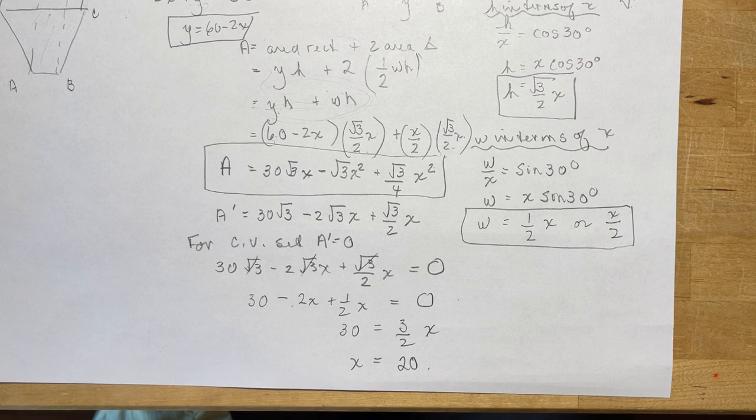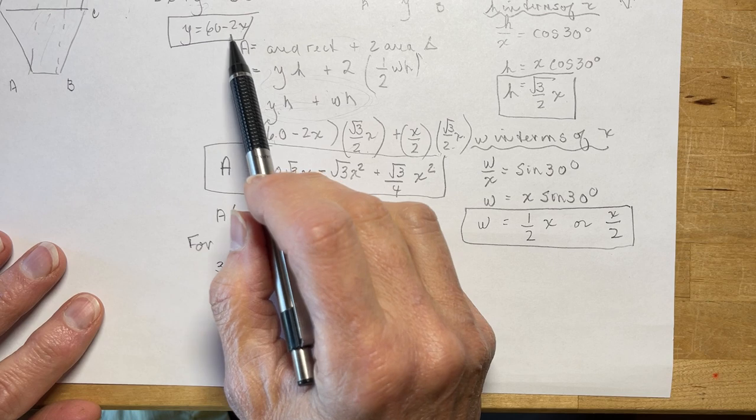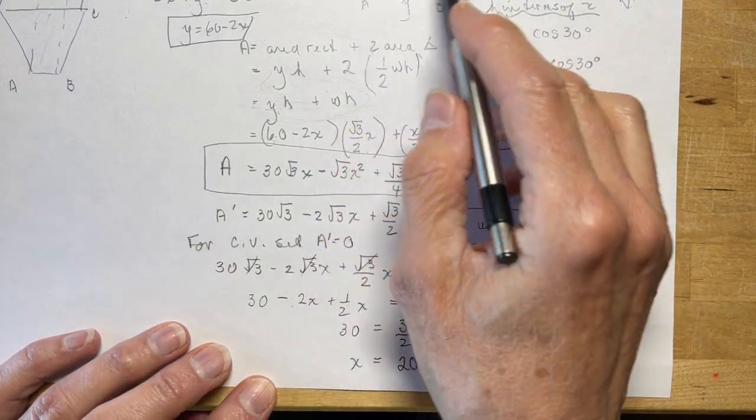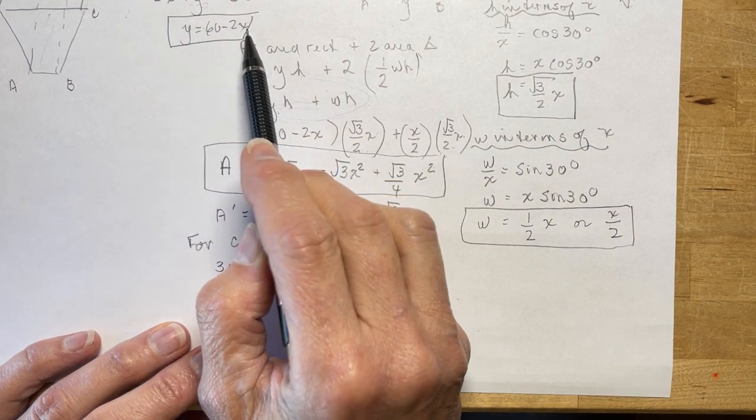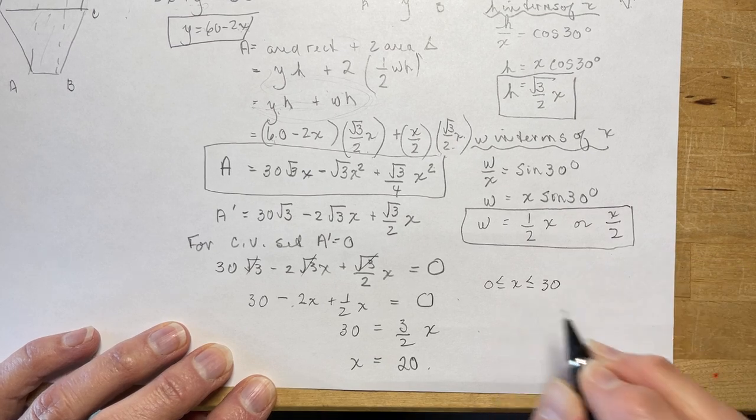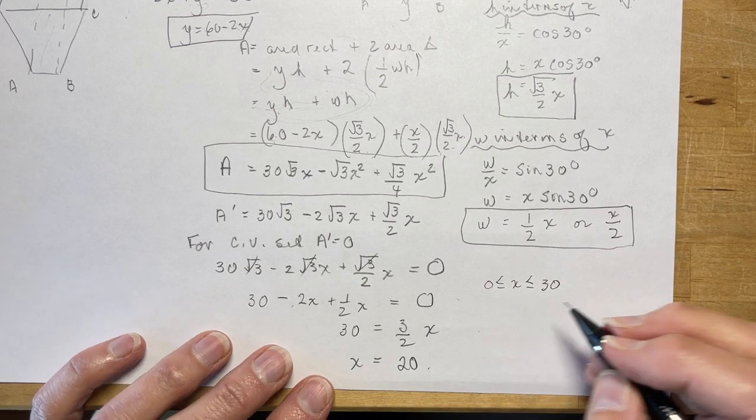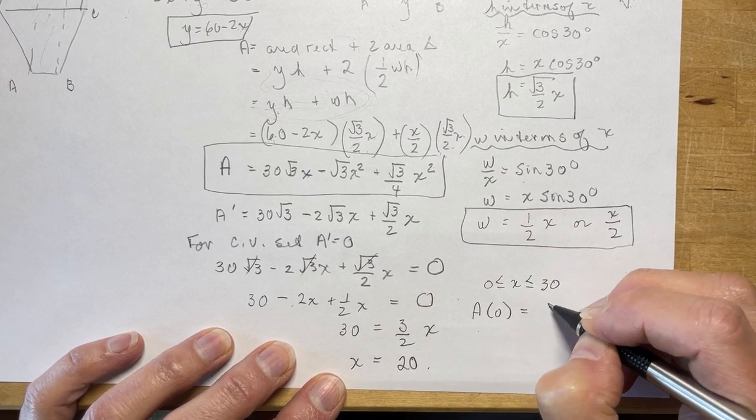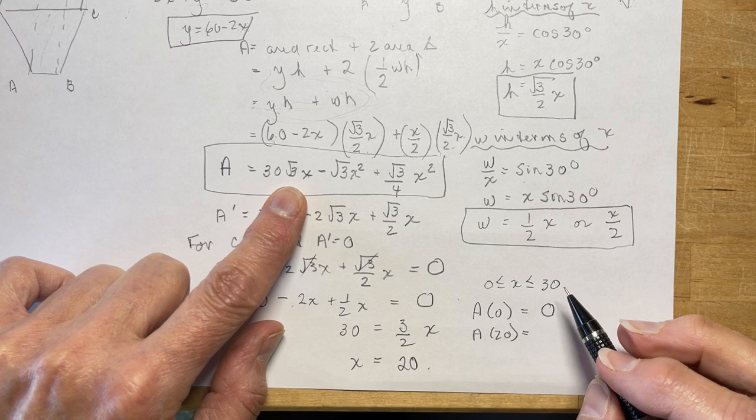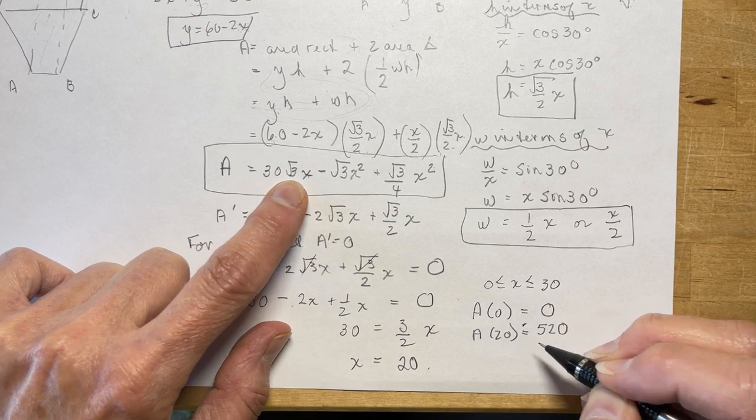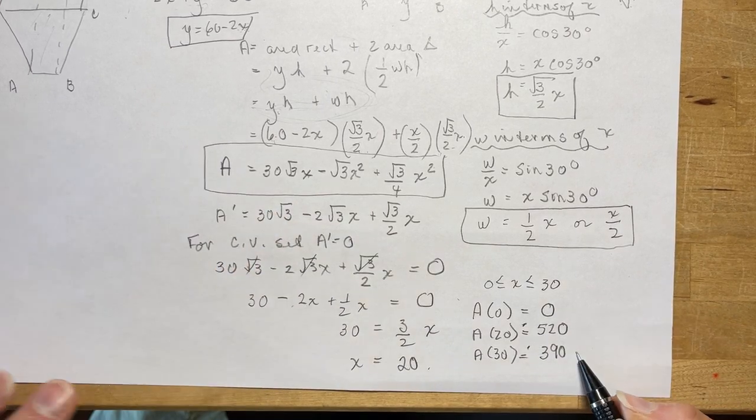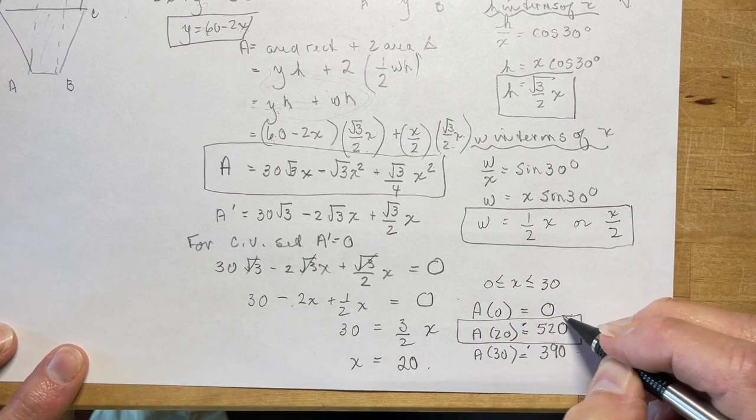So I'm saying that the maximum is going to occur when x is 20, which means y is going to be 20 as well. Now I did say that if we have 60 centimeters, then x has to be between 0 and 30. So I'm going to check what the area will be for each of these. The area when x is 0 is going to be 0. The area when x is 20, you should get about 520 approximately, and if you do the area at 30 you're going to get about 390. So obviously the right answer was the one we found, which is 20.